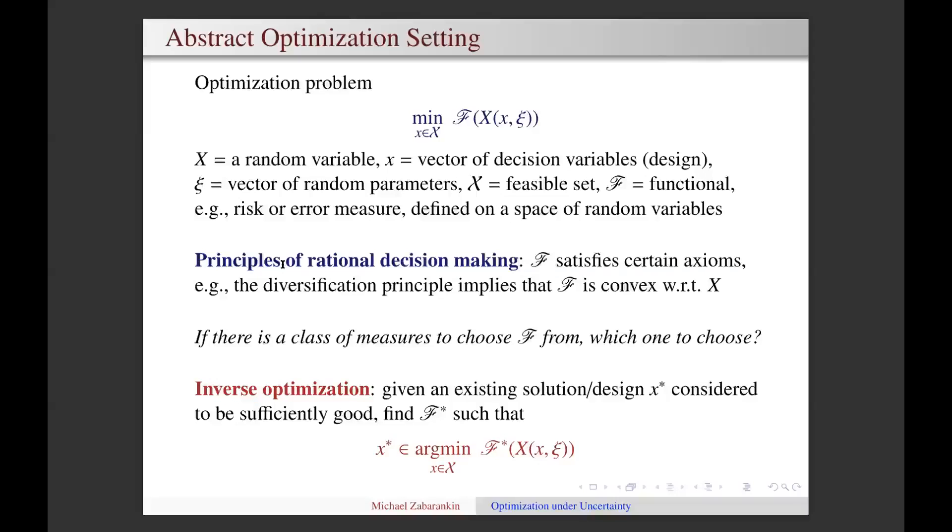In portfolio theory, the random variable X is a portfolio rate of return, which is the sum of products of assets rates of return and portfolio weights. In this case, assets rates of return are random parameters and portfolio weights are decision variables. Often, there are several constraints which determine the feasible set for decision variables.